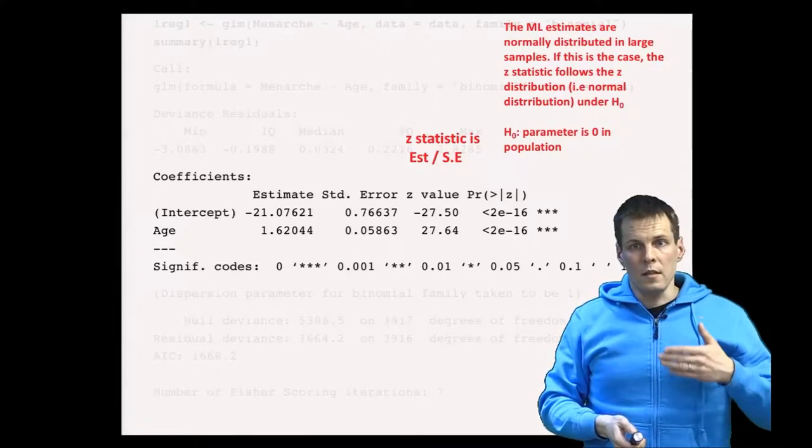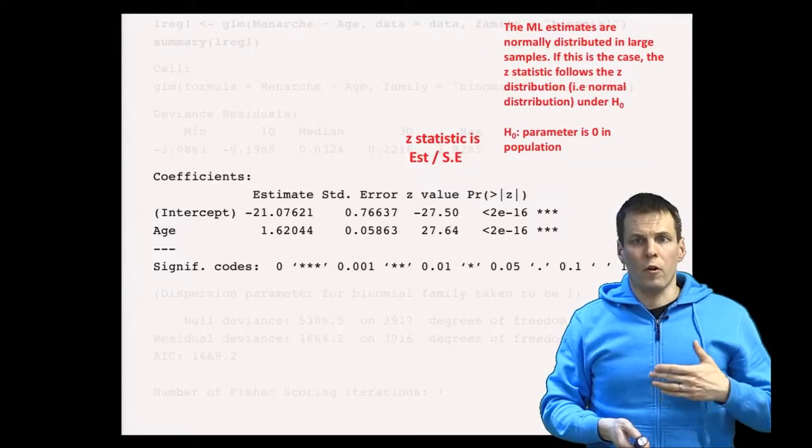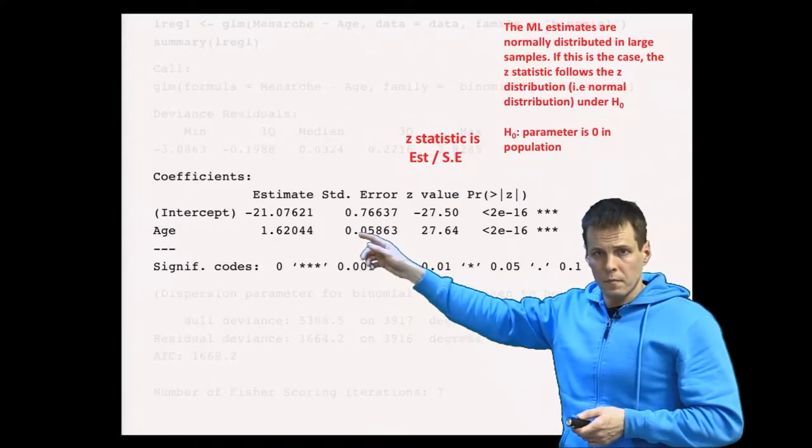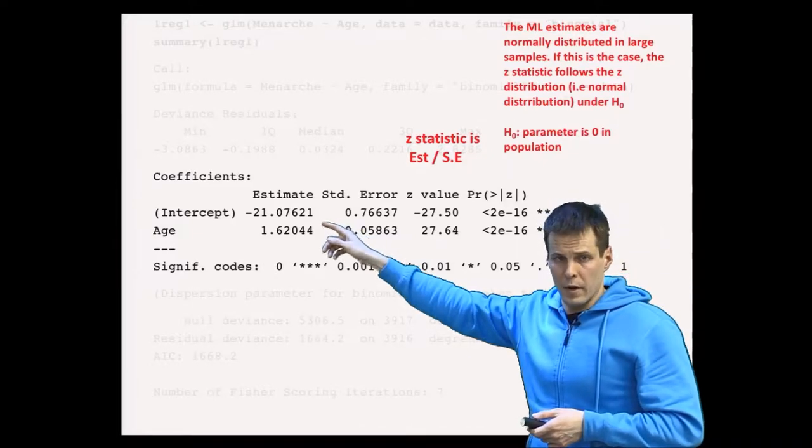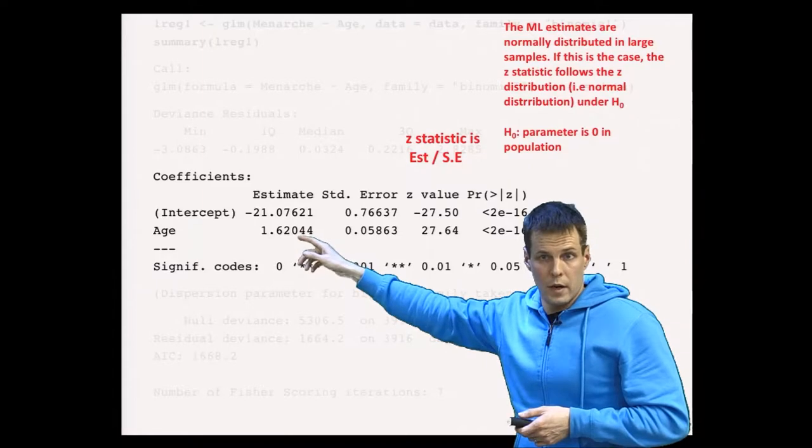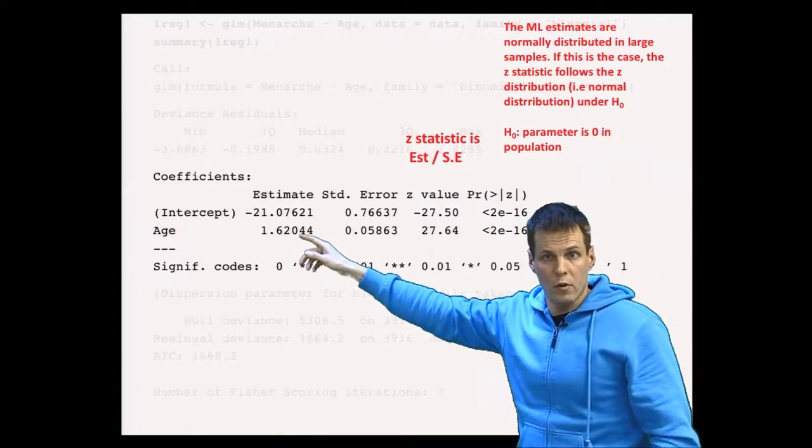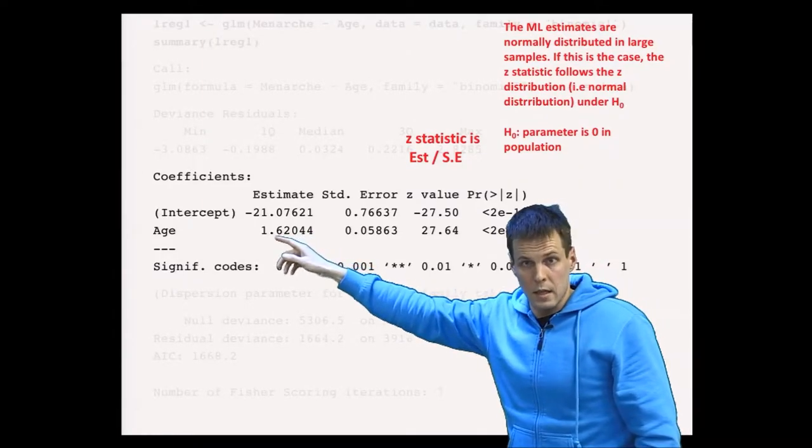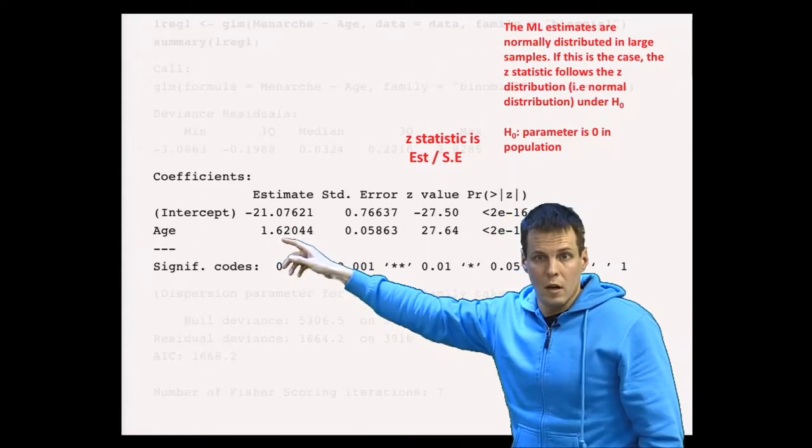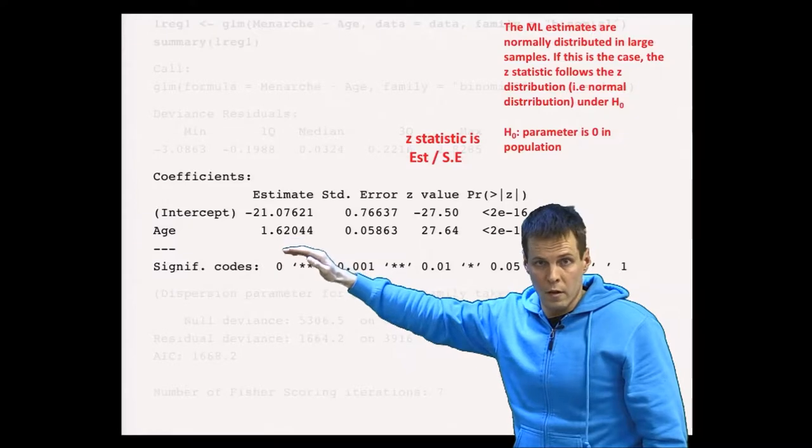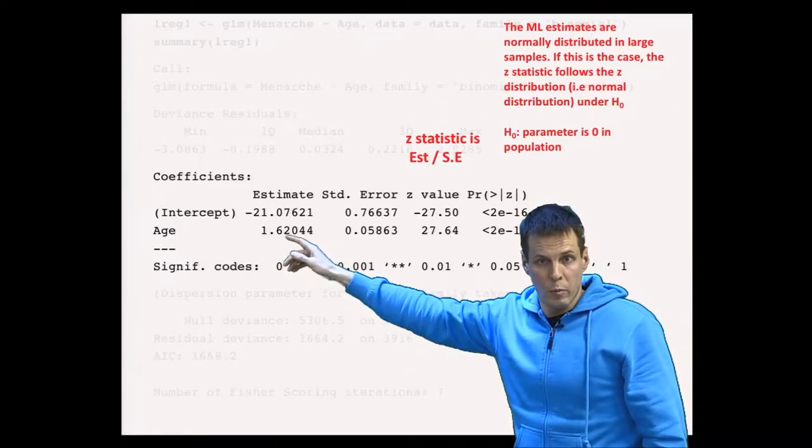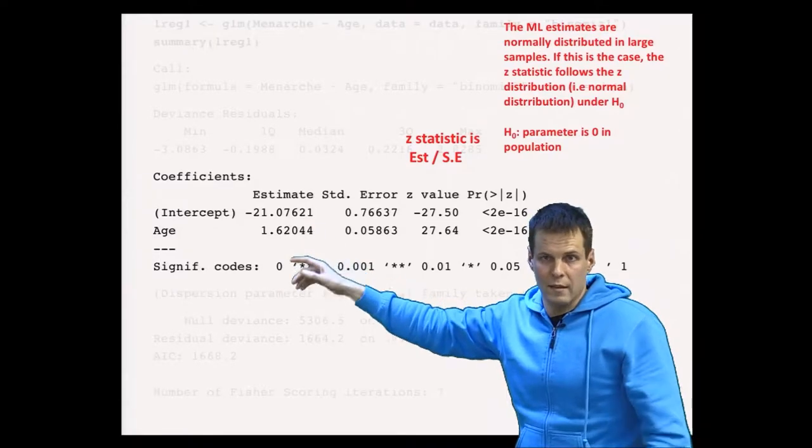What is the magnitude of that effect is a bit more complicated question to answer. We really can't say that the probability of having had menarche increases by 1.6 when the girl gets one year older. One reason is that our 1.6 increase gets us beyond the range of the data. So if the probability is zero initially, you increase age by one, the predicted probability would be 1.62. So it doesn't work that way.